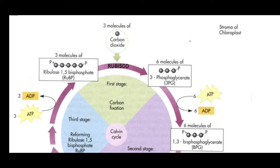RuBP is a 5-carbon structure. It combines with CO₂ to form an unstable 6-carbon intermediate, which immediately breaks down into 3-phosphoglycerate (3-PGA), also called 3-phosphoglyceric acid. This is the first stable product formed in the Calvin-Benson cycle. Because of this 3-carbon stable product, the process is also called the C3 cycle.